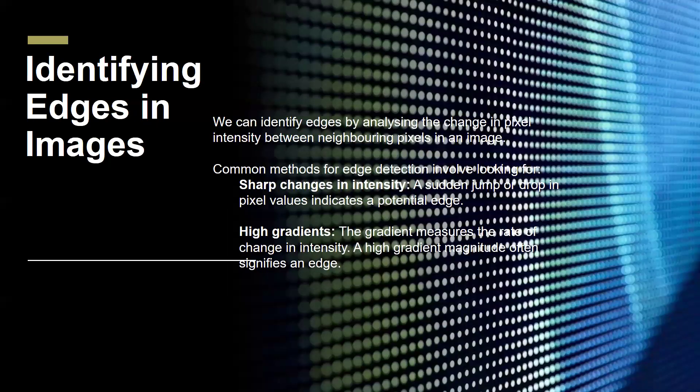How do we identify edges in an image? Identifying edges involves analyzing the relationship between neighboring pixels. We often look for sharp variations in intensity values, which suggest a transition from one region to another. The concept of gradients also comes into play here — the gradient represents the direction and magnitude of change in intensity.